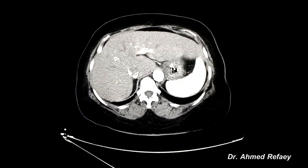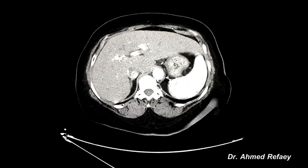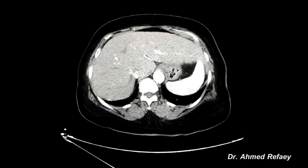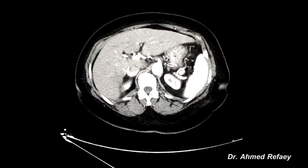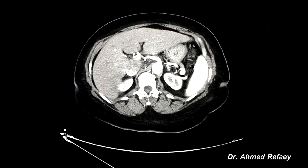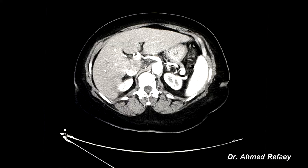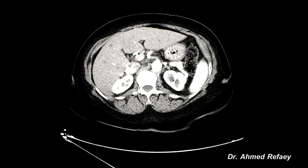The arterial phase means imaging of the liver after 35 seconds from the start of intravenous contrast administration, when the contrast reaches the liver through the hepatic artery. This is the celiac trunk and this is the hepatic artery. In this phase we can detect any hypervascular tumor in the liver.